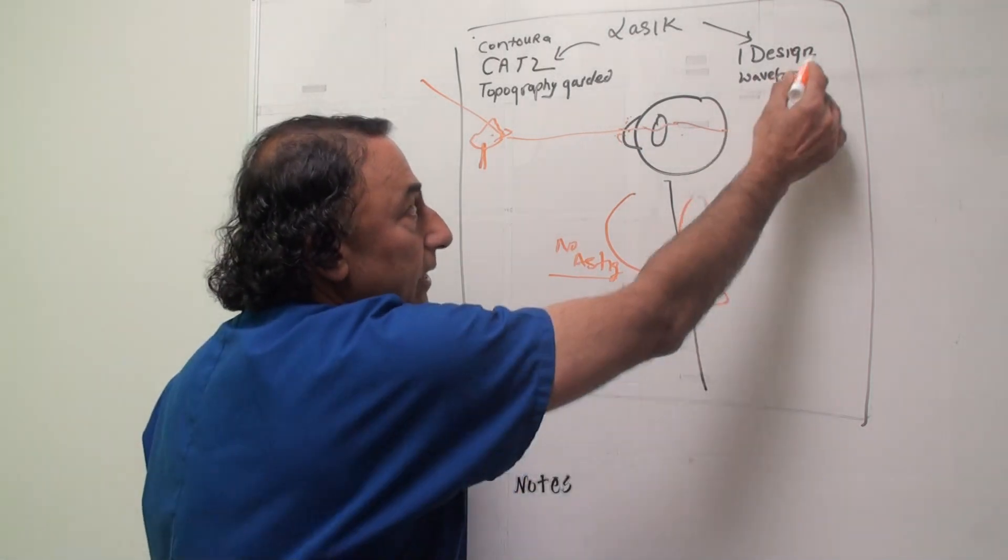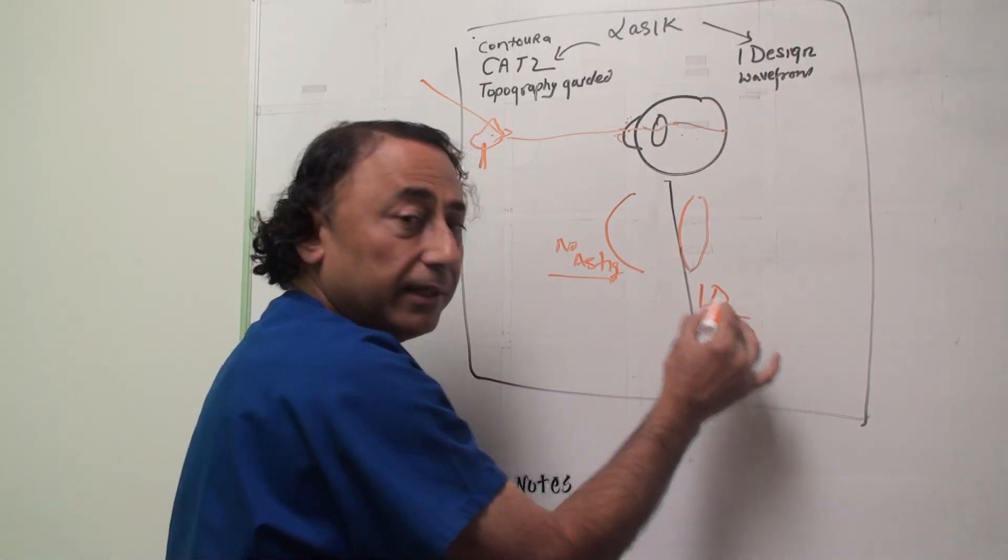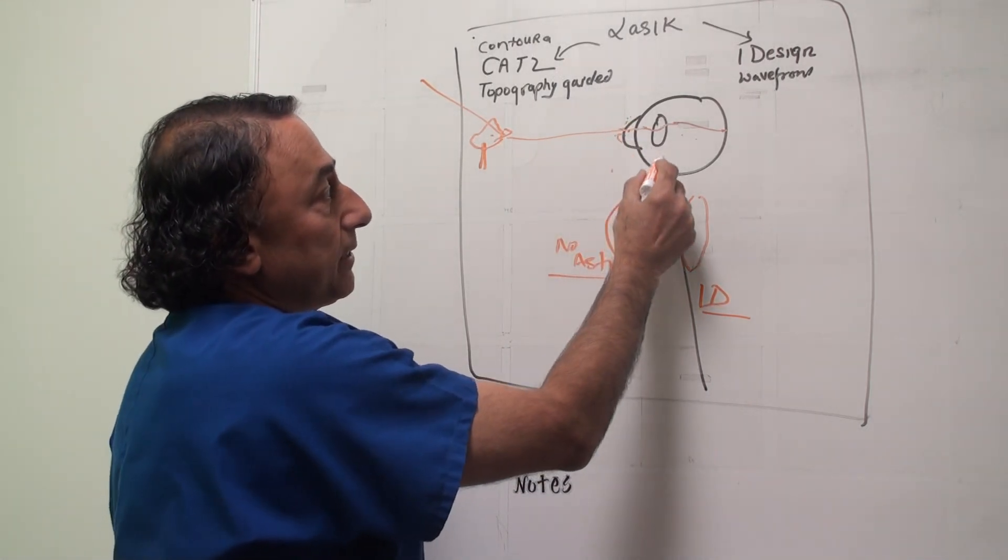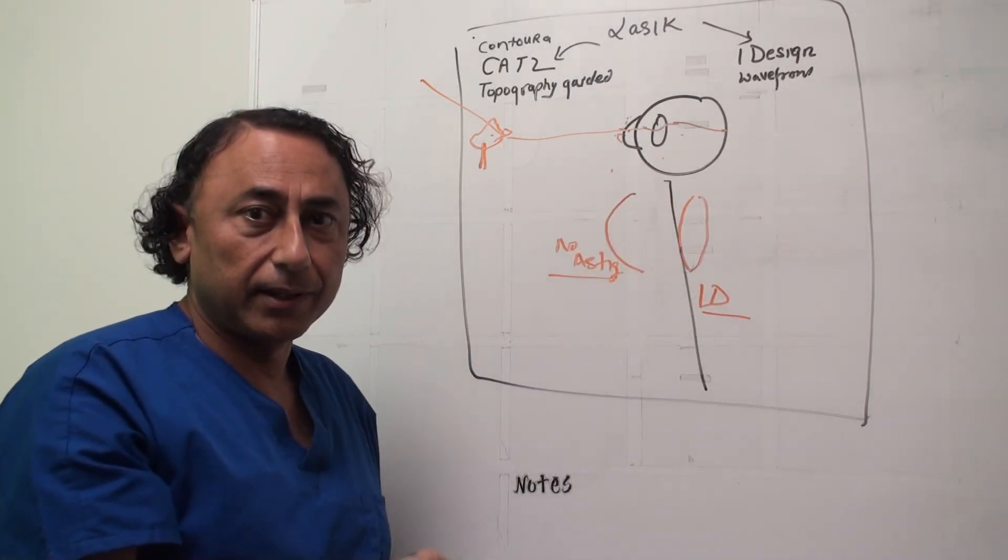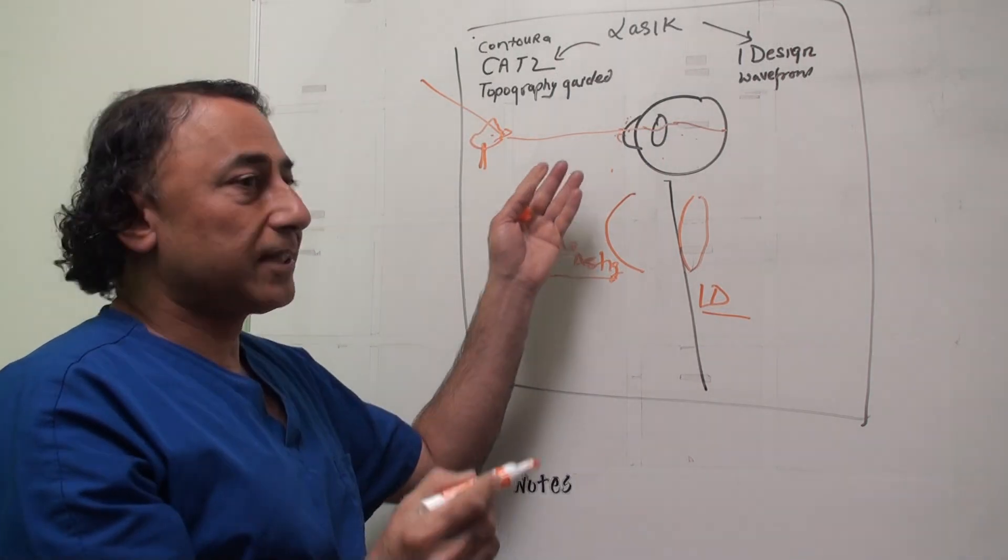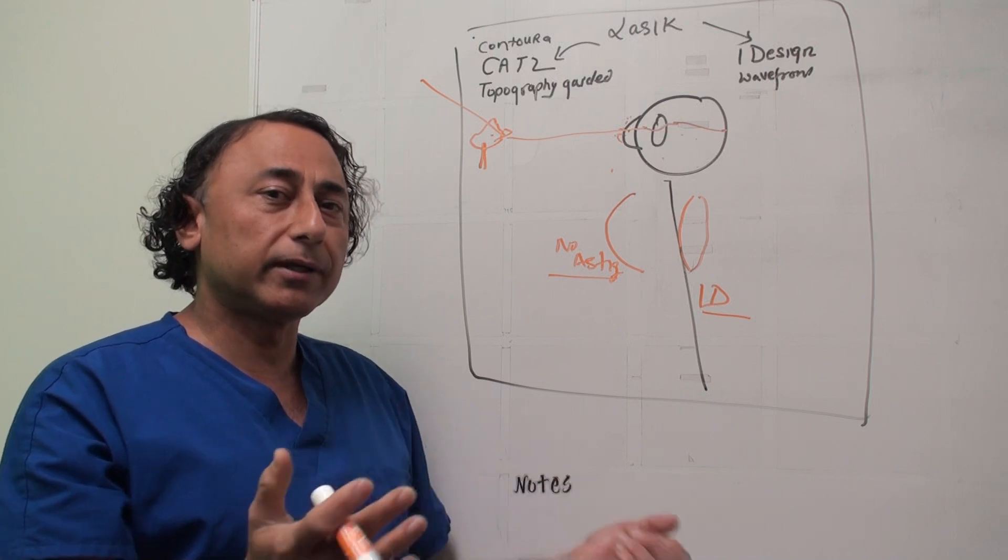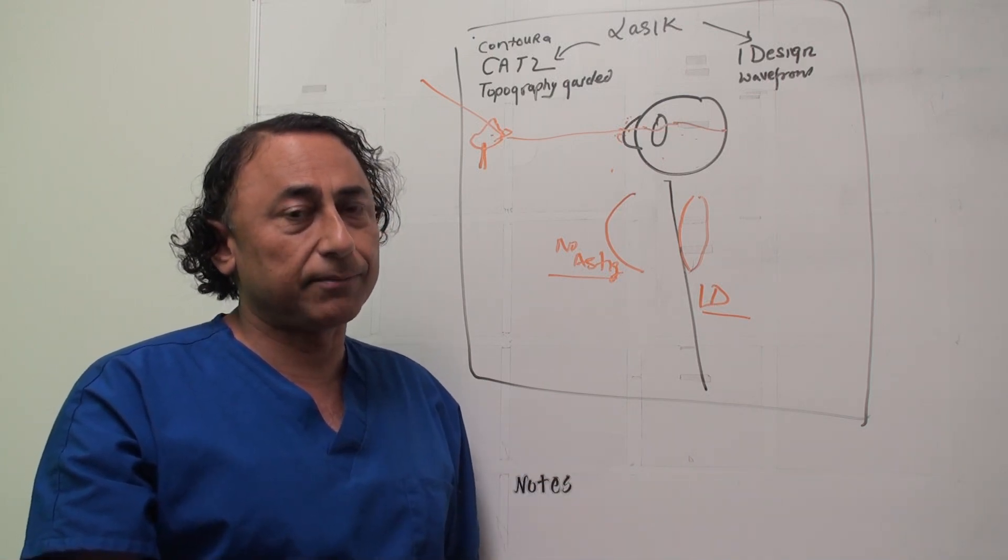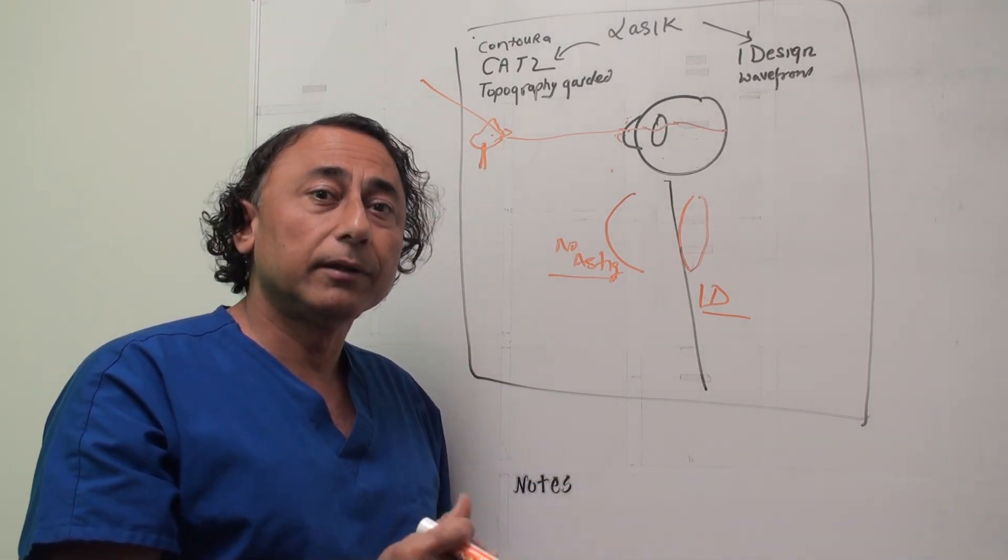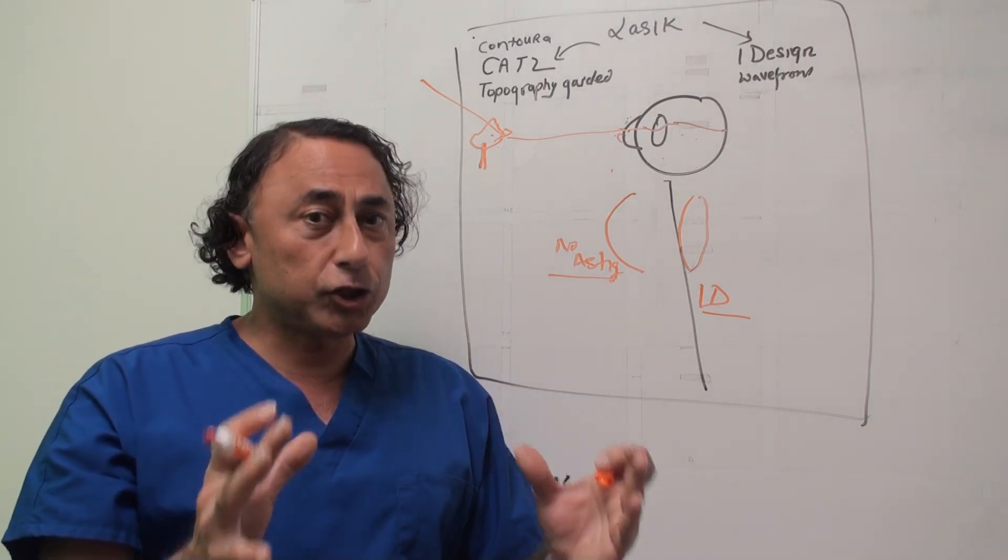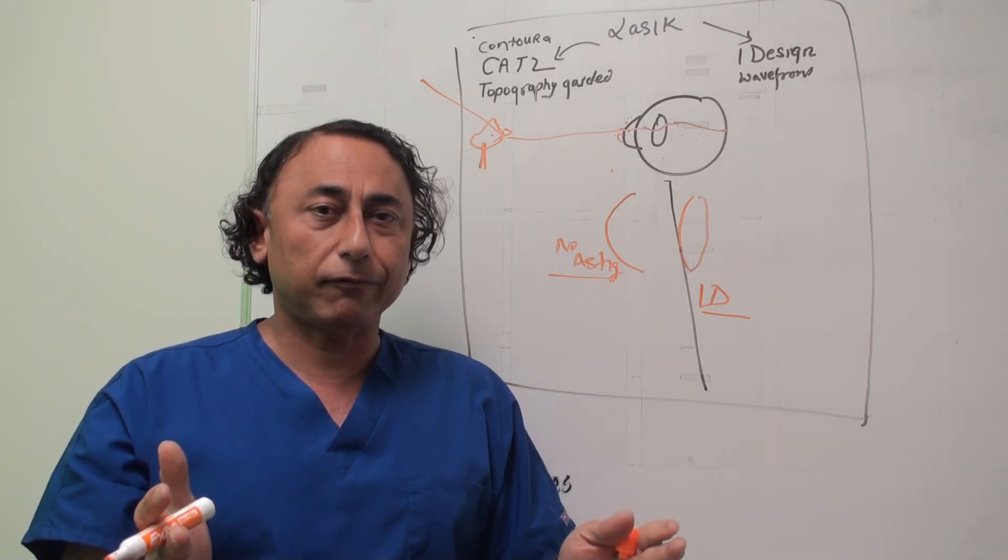But the eye design wavefront will detect it and treat it because it's detecting the cornea plus the lens plus the vitreous plus the back. If you just have pure astigmatism on the cornea with no other error, then topography guided would be good. But if you want to correct the whole vision, because this is what we're after,